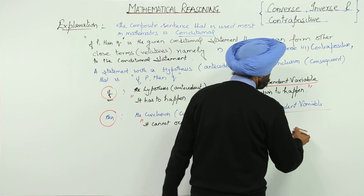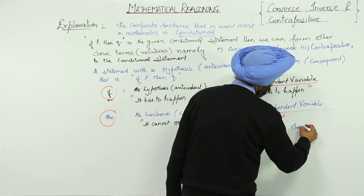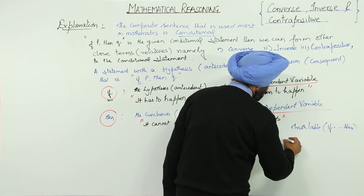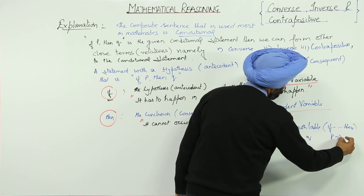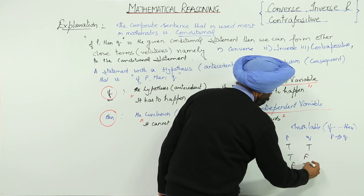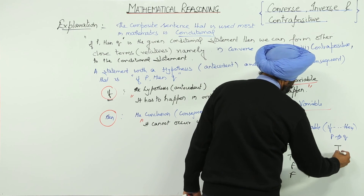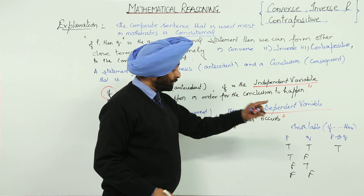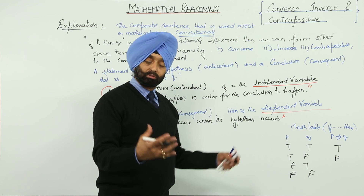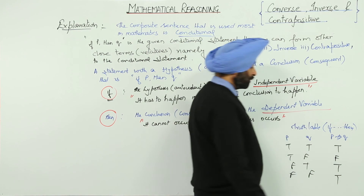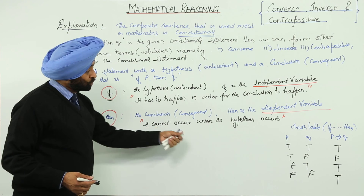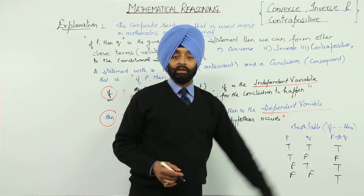Based on this briefing, we made a truth table for the conditional. For P implies Q: if both hypothesis and conclusion happen, it is true; if the hypothesis is there but the conclusion is not, it is false; if the hypothesis is absent but the conclusion is there, it is true; and if both are false, it is also true. We used these terms because we are going to apply them for converse, inverse, and contrapositive.